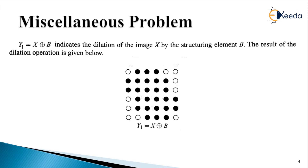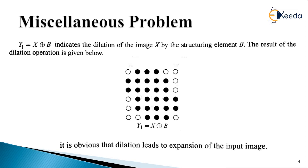The structuring element B is symmetric and the origin is at the center. This dilation leads to expansion of the input image, which is the answer to part two.